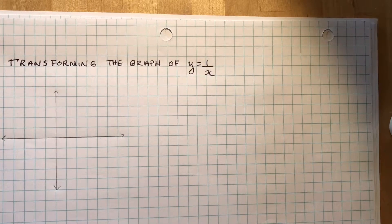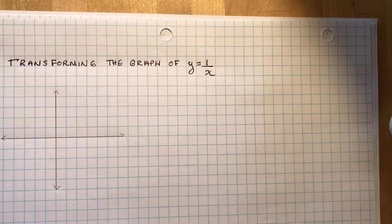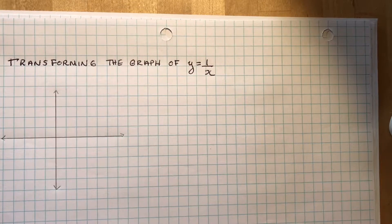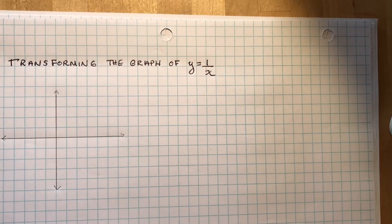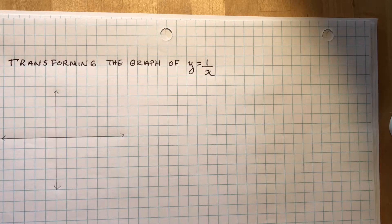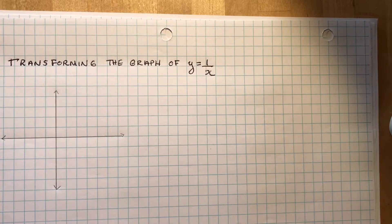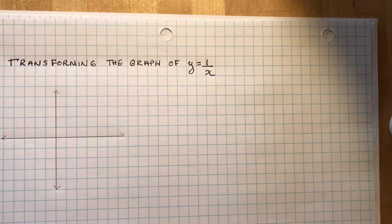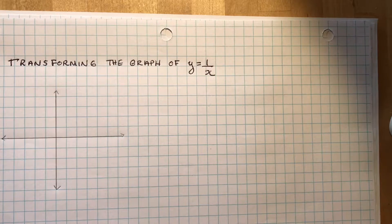Before I leave you with Chapter 1 for your unit test, I want to go over something that's not covered very clearly in Nelson Functions 11, and that is how to transform the graph of y equals 1 over x. We did have a quick discussion of the graph of 1 over x in the section on Parent Functions, but I want to go over that and do a few of the transformations to show you how it works for 1 over x.